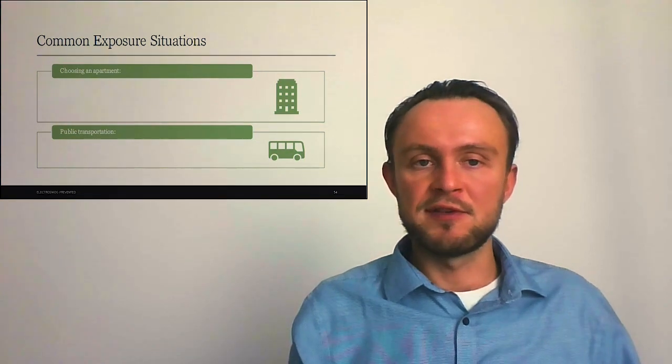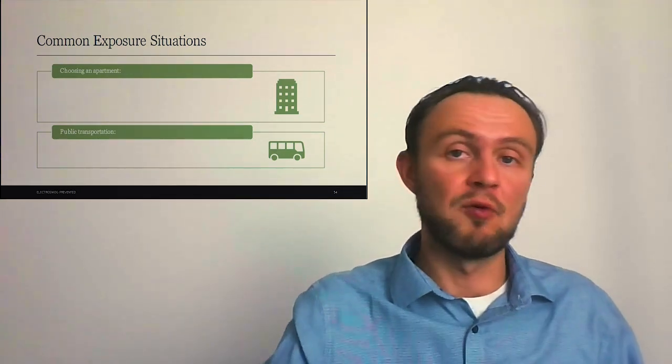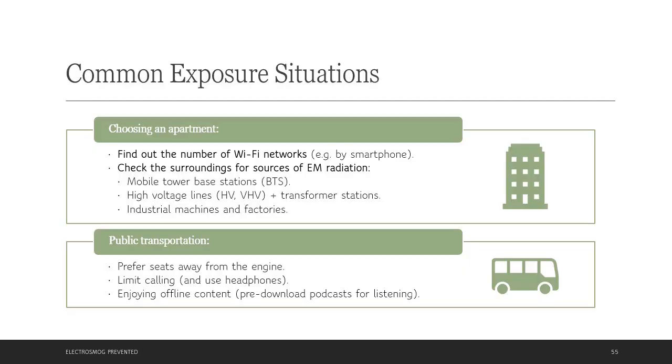How we can improve our safety when choosing an apartment? How about public transportation? So we can find out number of Wi-Fi networks nearby home and also check surroundings for sources of electromagnetic radiation. How many mobile tower base stations are around or high voltage lines, transformer stations or industrial machines. In public transportation, we may prefer seats away from the engine, limit calling and use headphones, but also enjoy offline content. Pre-download podcasts for listening.